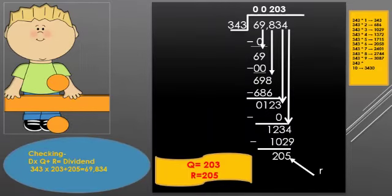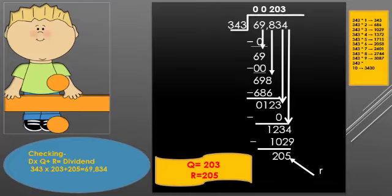Children, now let's see how we use the long division method with the help of an example. Here, 69,834 is given as the dividend and 343 is given as the divisor.